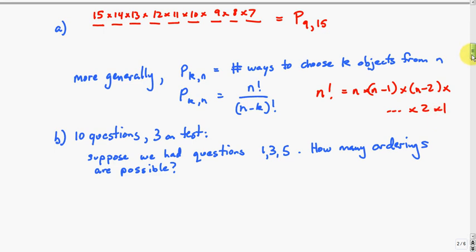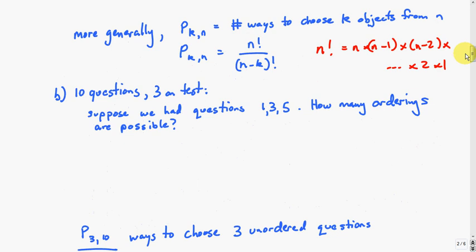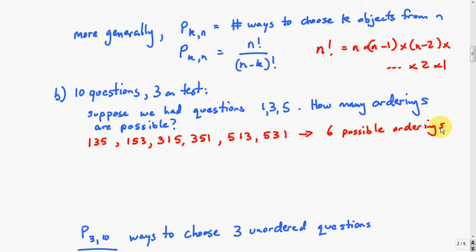For combinations, if we had 10 questions and wanted to put 3 on a test, order doesn't matter. Let's suppose we picked questions 1, 3, and 5. There are many orderings possible, but we only want to count that once. We could write out all the ways: 1, 3, 5; 1, 5, 3; 3, 1, 5; 3, 5, 1; 5, 1, 3; and 5, 3, 1. In this case there are 6 possible orderings.